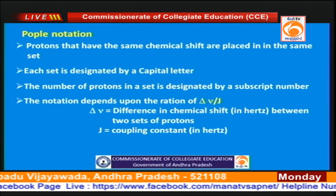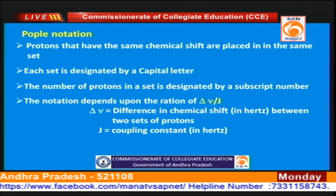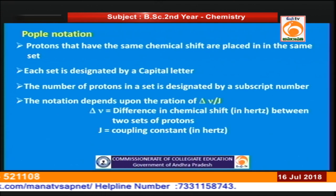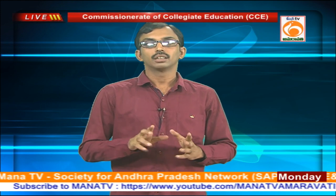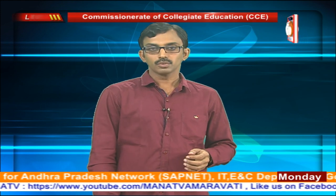Now let us go to the ABCX notation. Protons having the same chemical shift are placed in one set and each set is designated by a capital letter — A, B, or X, etc. The notation depends on the value of ΔV/J, where ΔV is the difference in chemical shift between the two sets of protons and J is the coupling constant.